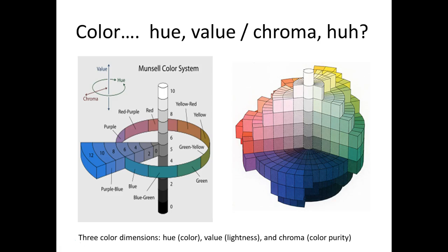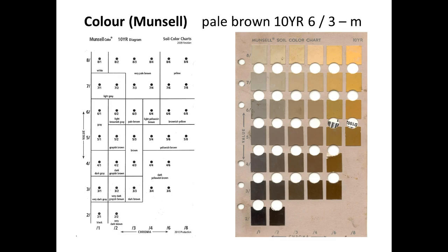Hue, value, chroma — what does this mean? This is color theory by Munsell; it's just a system. Color refers to the hue. The hue is the color itself. The value going up and down is the lightness, and then chroma is the color purity. Don't worry about these details, but it will help you navigate through the Munsell color book in the field. When you use the Munsell color book, there are all these pages associated with hue, value, and chroma, and there's also a name — for example, very pale brown, yellow, or gray.